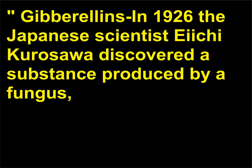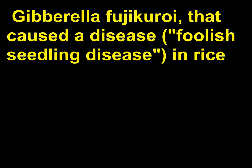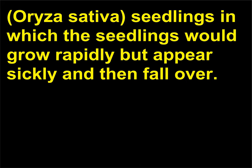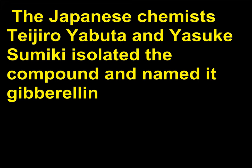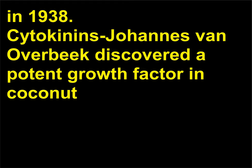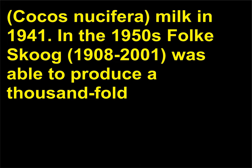Gibberellins: In 1926, the Japanese scientist Eiichi Kurosawa discovered a substance produced by a fungus, Gibberella fujikuroi, that caused a disease (foolish seedling disease) in rice (Oryza sativa) seedlings, in which the seedlings would grow rapidly but appear sickly and then fall over. The Japanese chemists Teijiro Yabuta and Yusuke Sumiki isolated the compound and named it gibberellin in 1938. Cytokinins: Johannes van Overbeek discovered a potent growth factor in coconut (Cocos nucifera) milk in 1941.